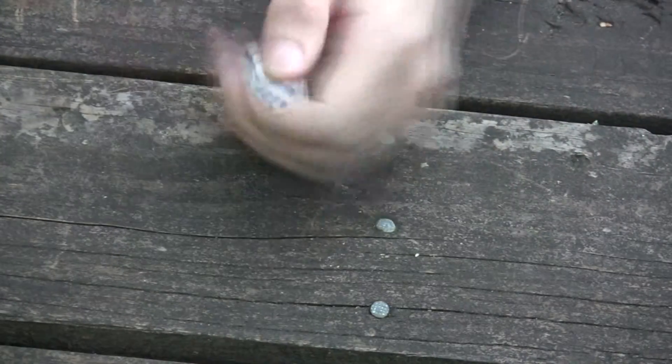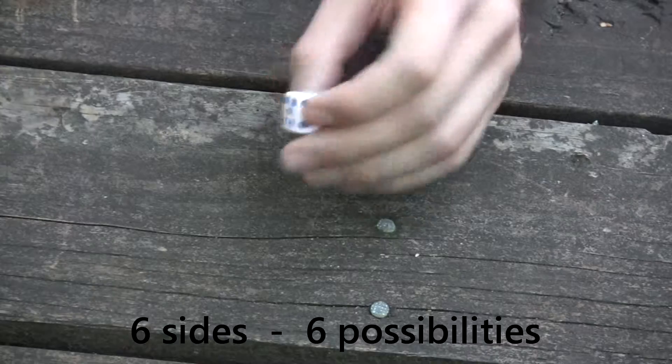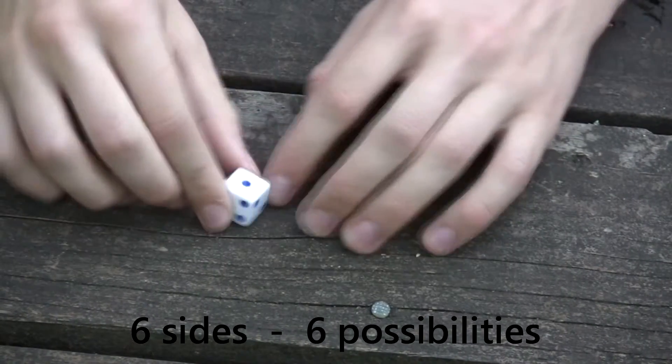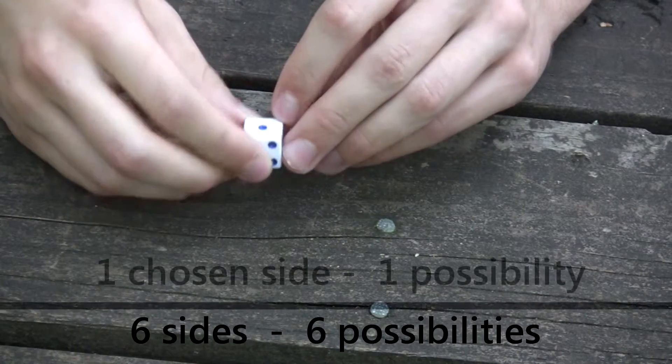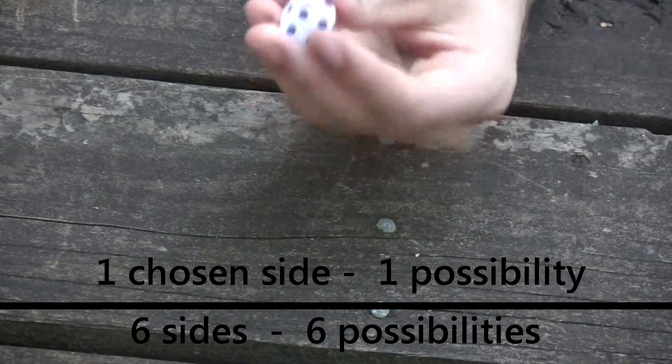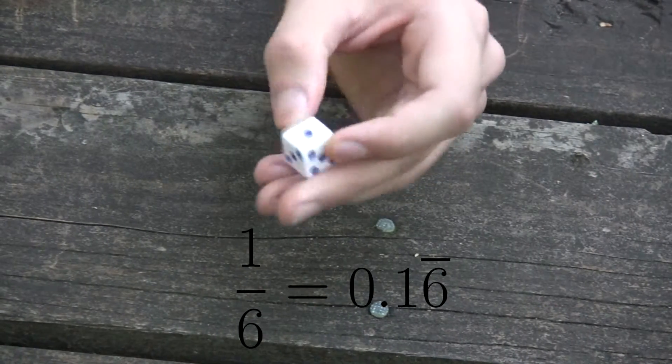Now if we look at this die, we can see that there's six sides, it's a cube. It's a normal six-sided die, some dice have more sides than that. But we'll look at this one, let's say, the one face. Now this is one of the six faces, and so when we roll it randomly, we can say that the chance of rolling a one is one-sixth, or 0.166 repeating, if you'd rather.